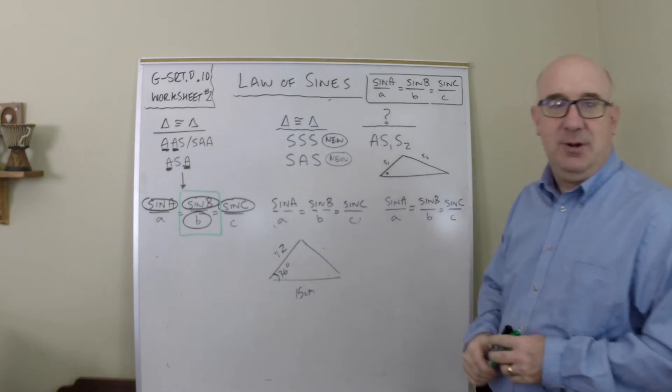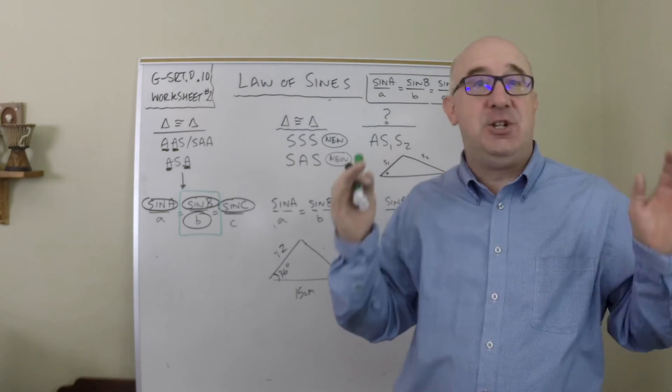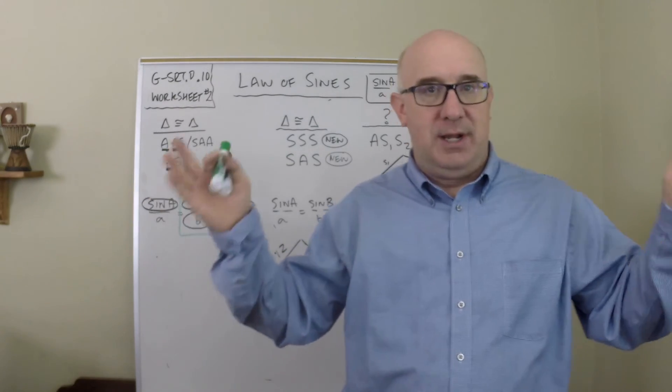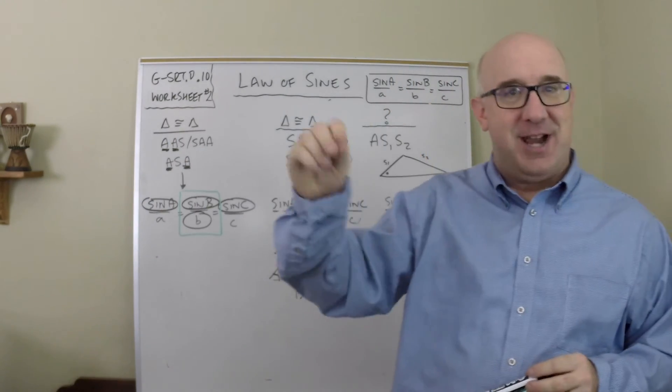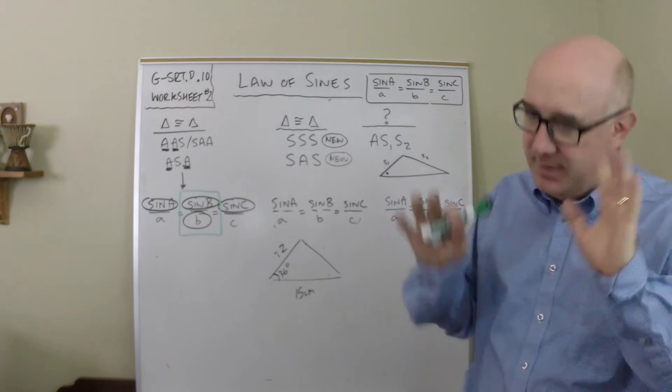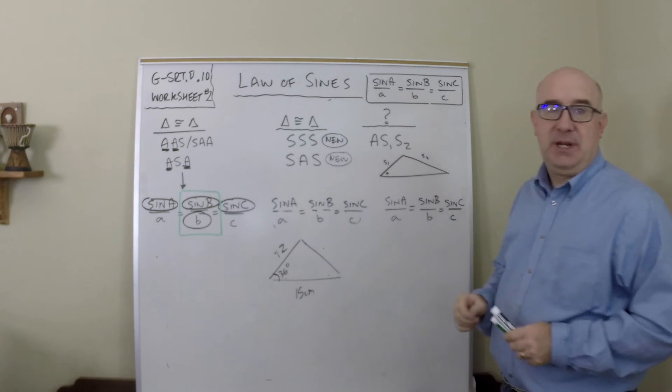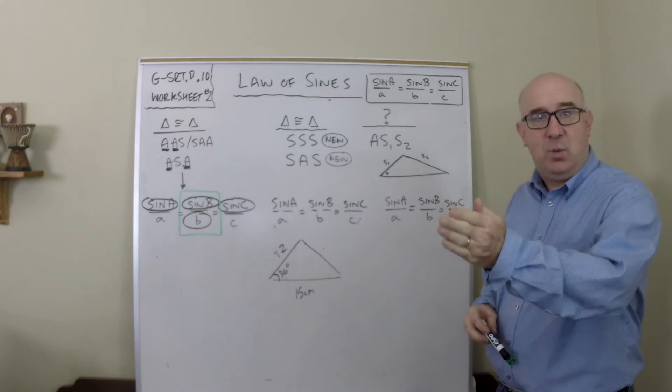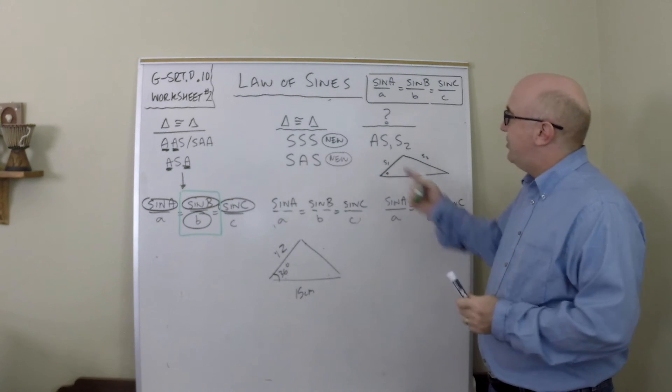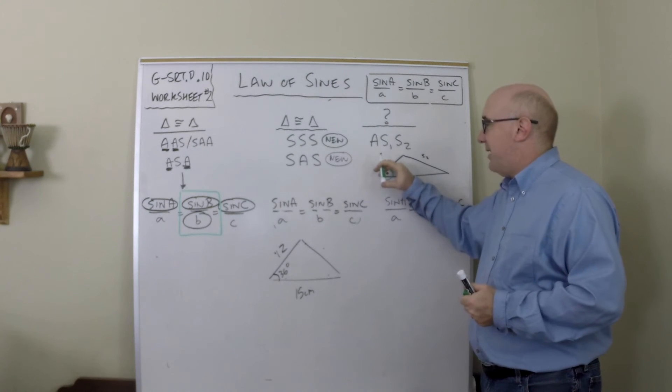This brings us to angle-side-side—the word that every teacher when they write it on the board says you can't say that word in a certain way. It's got to be angle-side-side. Some teachers avoid it by going side-side-angle. I put a one and a two because it distinguishes side one and side two. So what they're referring to is if you knew the angle, and then a side, and then a second side.